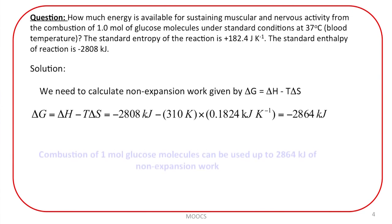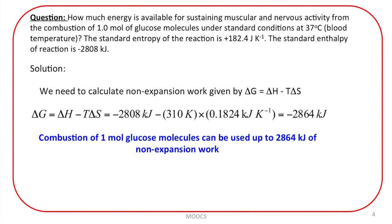So this is how you calculate the maximum non-pressure-volume work. That means, if you write down the chemical reaction corresponding to combustion of 1 mole of glucose molecules and do these calculations, it turns out that the combustion of 1 mole of glucose molecules can deliver up to 2864 kilojoules of non-expansion work.